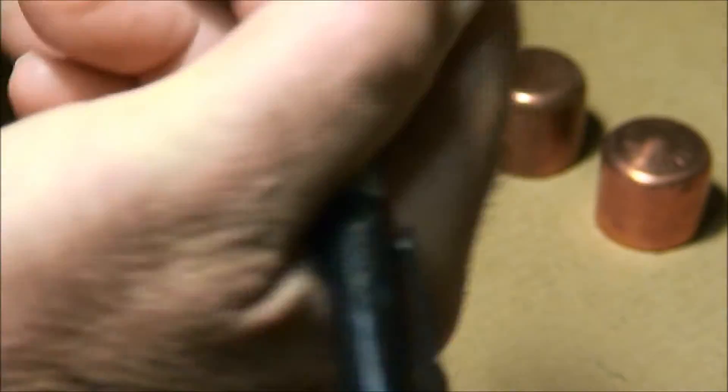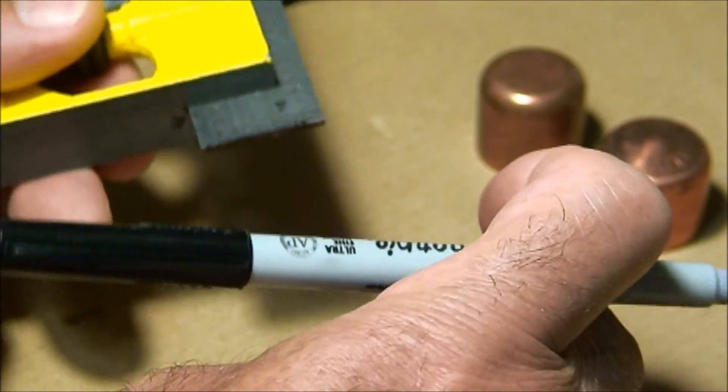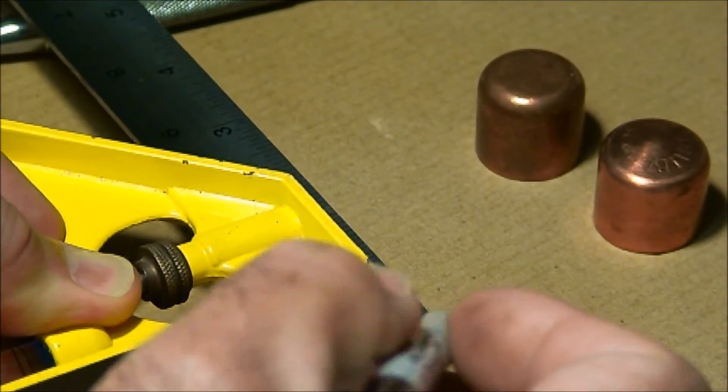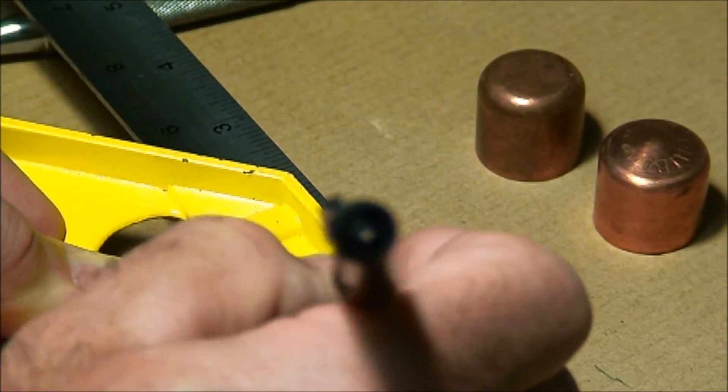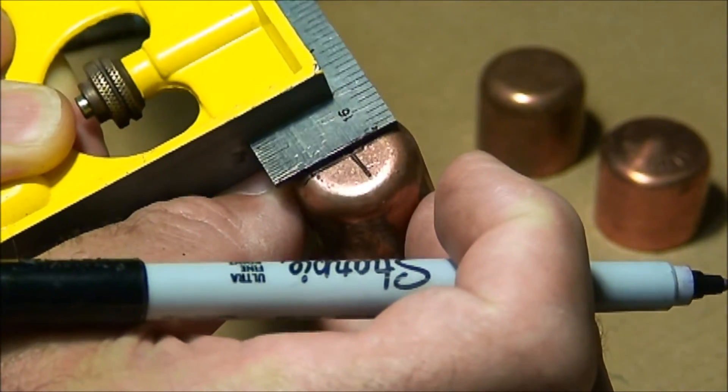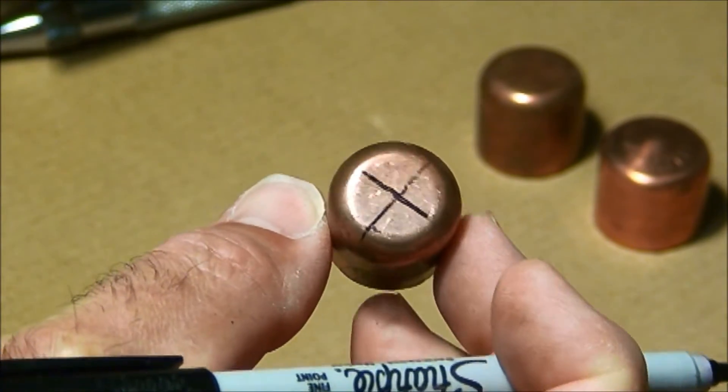Now that your square is set, you go the opposite direction, top to bottom, and make your mark. Double check it. Perfect. This is exact center.